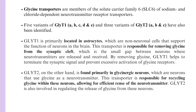Glycine Transporter 1 is primarily located in astrocytes, which are non-neuronal cells that support the function of neurons in the brain. This transporter is responsible for removing glycine from the synaptic cleft — the small gap between neurons where neurotransmitters are released and received. By removing glycine, Glycine Transporter 1 helps to terminate the synaptic signal and prevent excessive activation of glycine receptors.